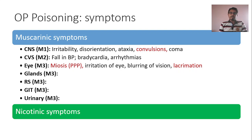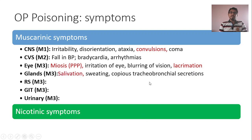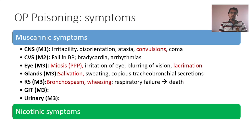All the glands — glandular secretions are increased. There is lacrimation, and not only that, there is also salivation, increased sweating, and copious tracheobronchial secretions. In the respiratory system, parasympathetic activation will lead to bronchoconstriction. Likewise, in OP poisoning, the manifestations are similar: there is bronchospasm leading to wheezing, and copious tracheobronchial secretions which contribute to respiratory difficulty. Frequently, death due to OP poisoning is because of respiratory failure.